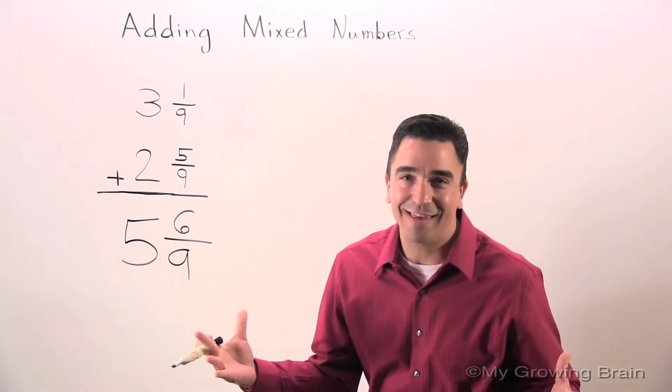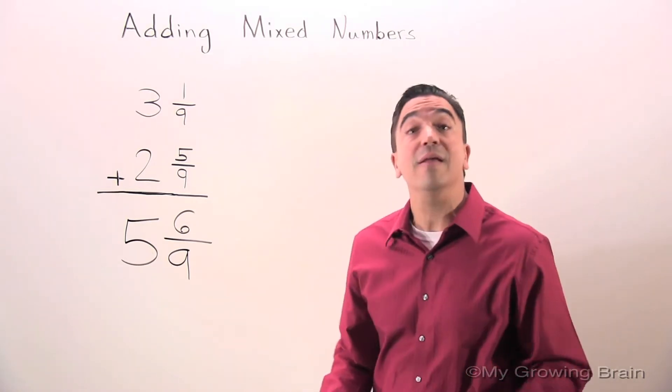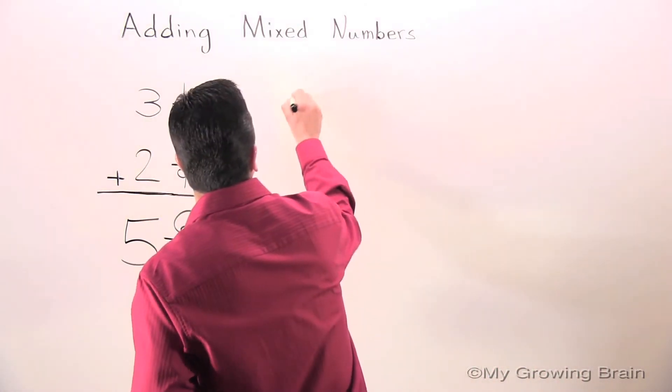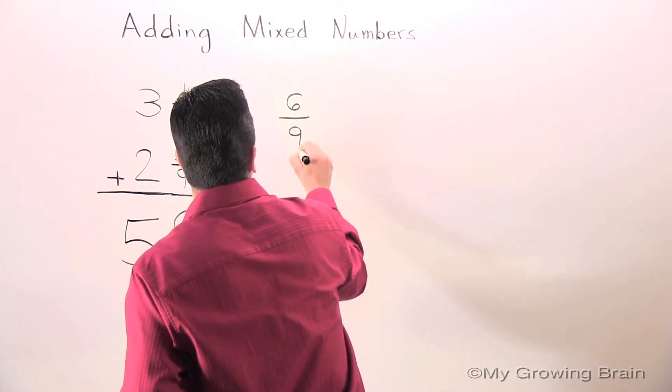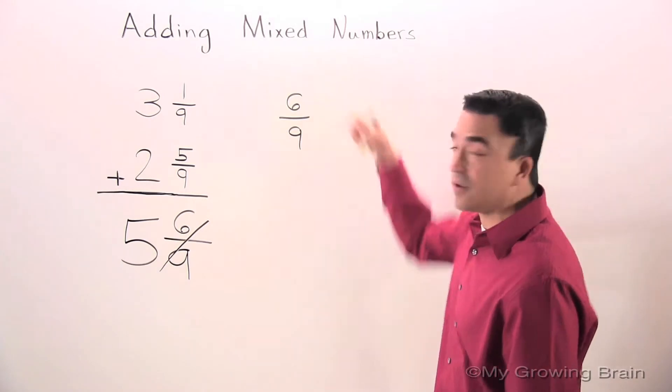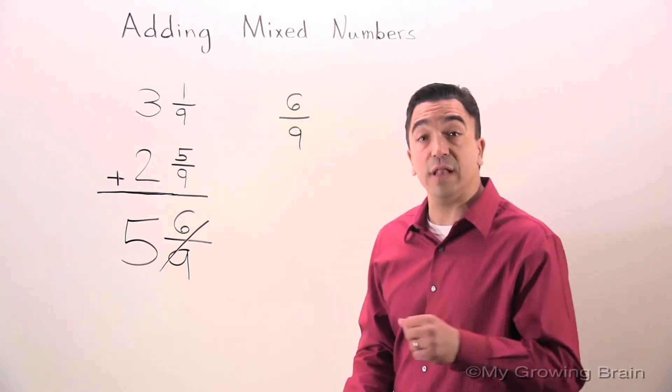We're not done yet. This needs to be in simplest form. So, what number can go into 6 and 9 evenly?